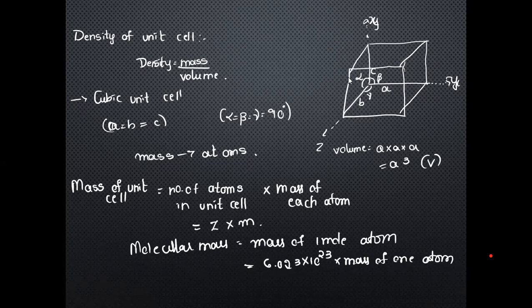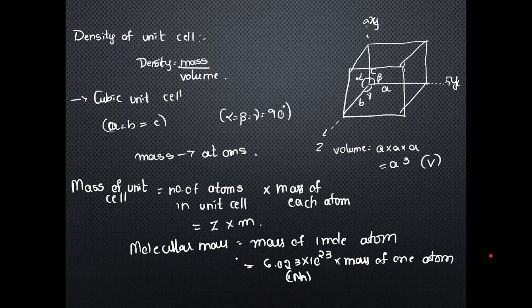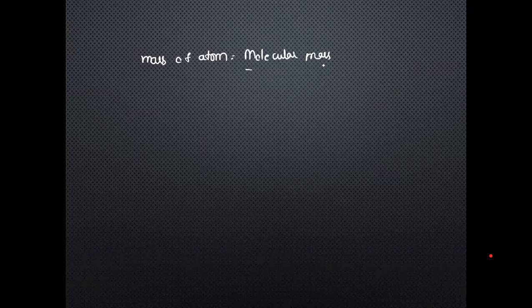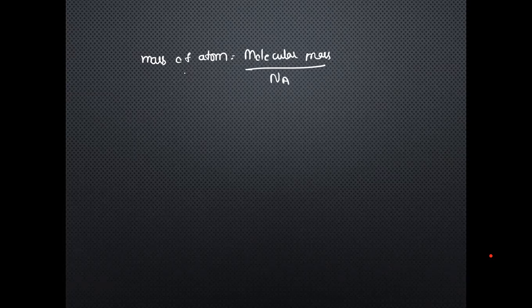Molecular mass divided by Avogadro's number gives the mass of one atom. Avogadro's number is 6.023 × 10²³. So mass of one atom M = molecular mass divided by Avogadro's number. Now we have the mass of each atom and the volume of the unit cell.